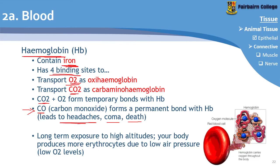Long-term exposure to high altitudes causes your body to produce more erythrocytes due to low air pressure, since less oxygen is available. Your body produces more red blood cells — sending more taxis to collect every last bit of oxygen. That's why athletes training at high altitude often have an advantage at sea level because they have more red blood cells than athletes who live at sea level.